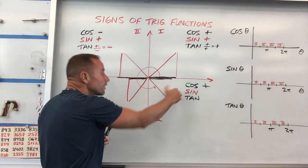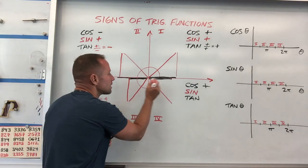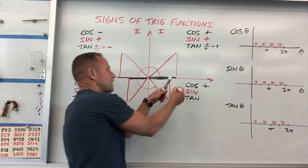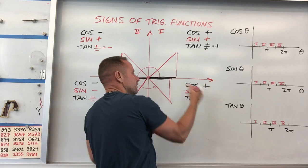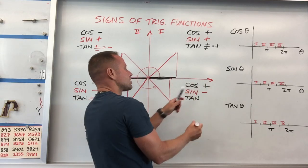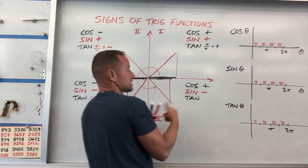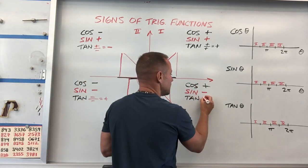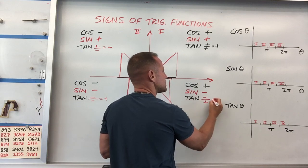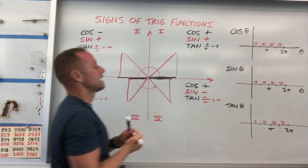Your vertical projection of this thing is going to be here — that's going to be negative. And so tangent is sine over cosine, or negative divided by a positive, which of course will give you that negative. And so that kind of summarizes the signs of these things.